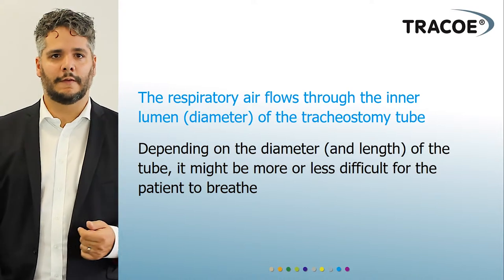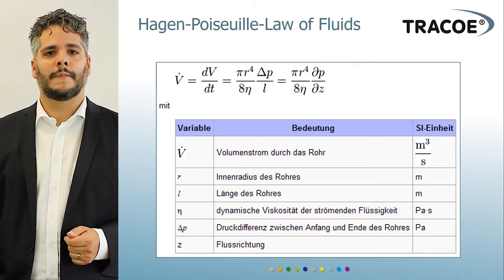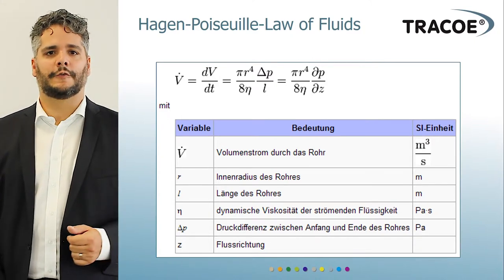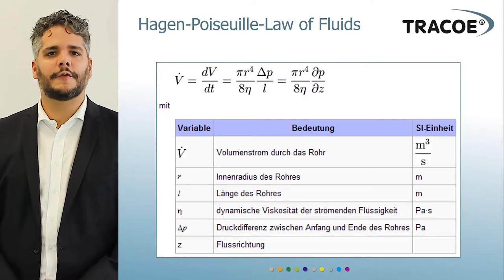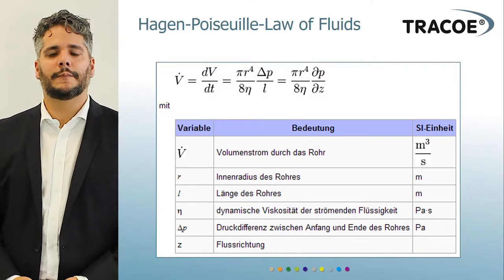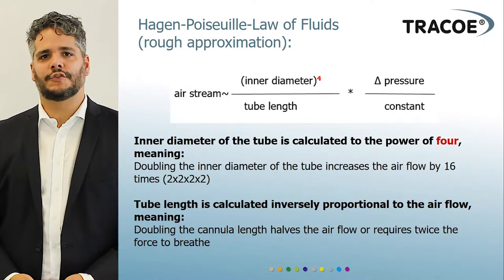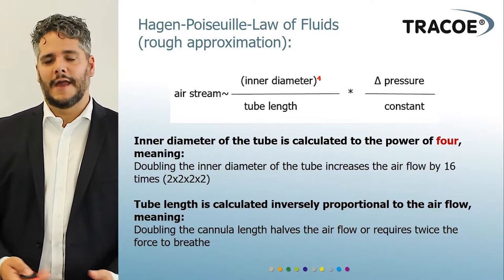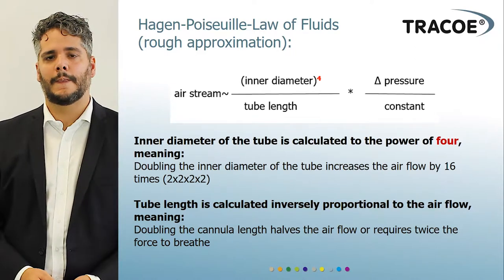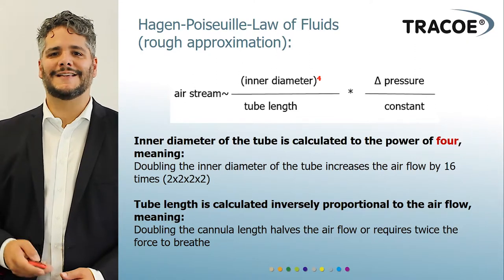There is a way to calculate this work of breathing called the Hagen-Poiseuille Law of Fluids. The formula takes into account many factors needed to calculate fluid flow — for example, the volume of the tube, the inner diameter, the length of the tube, and the viscosity of the fluid. A rough approximation shows that the inner diameter is taken to the fourth power in relation to tube length. This means if we double the inner diameter, air flow increases by 16 times.